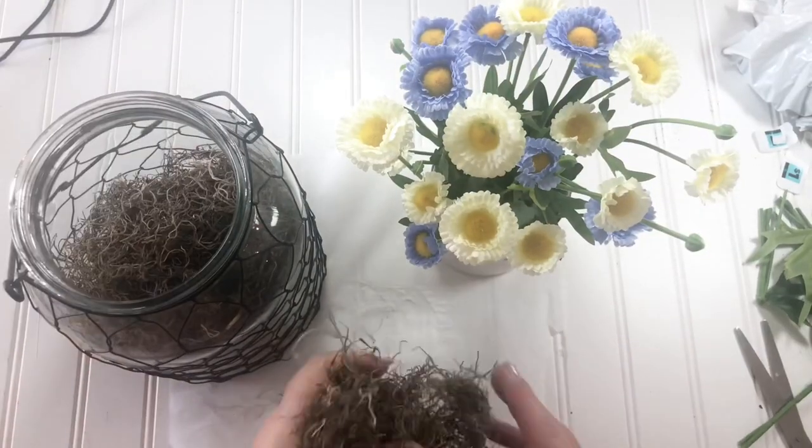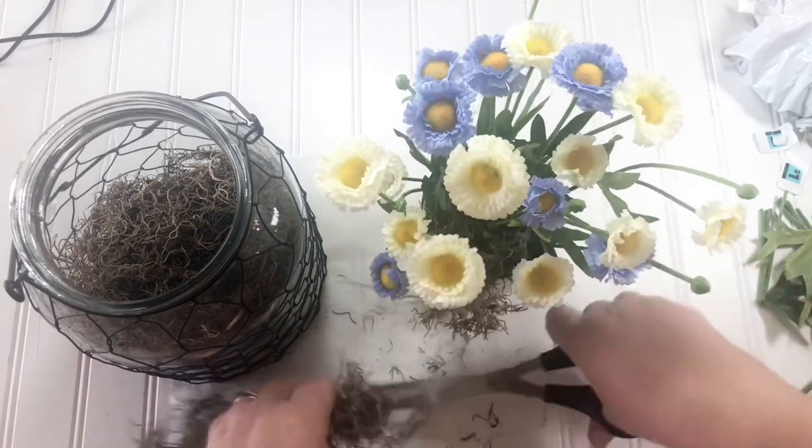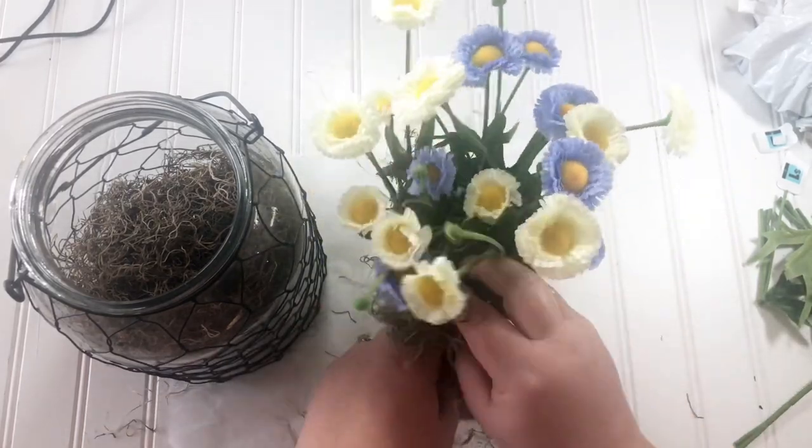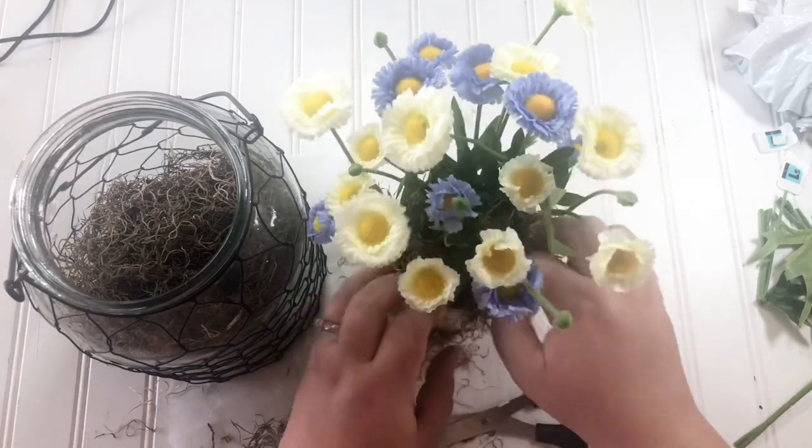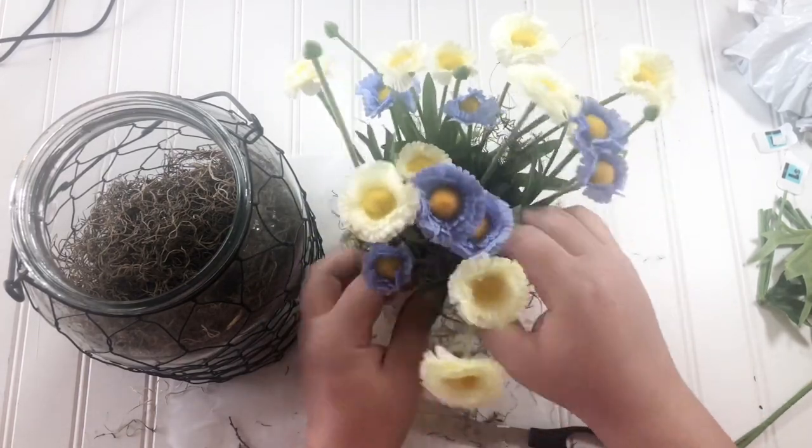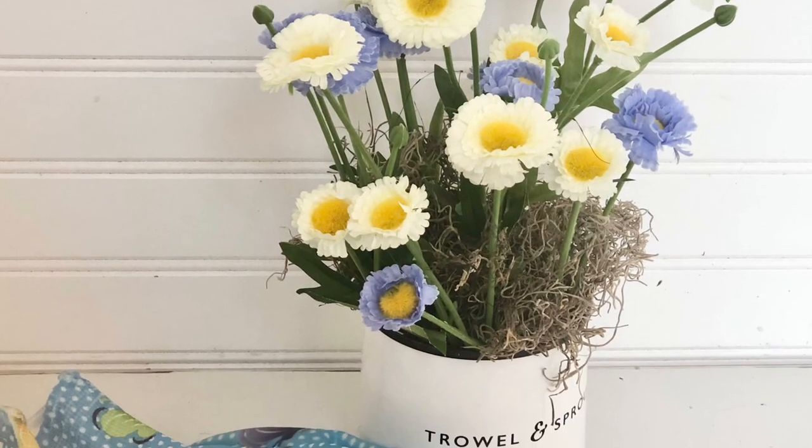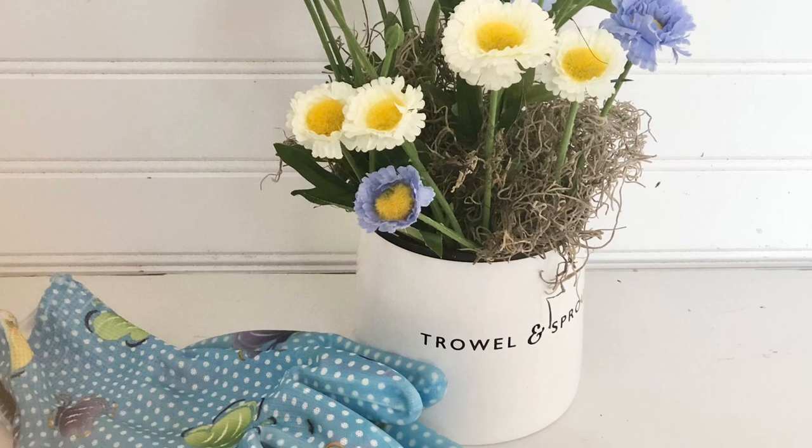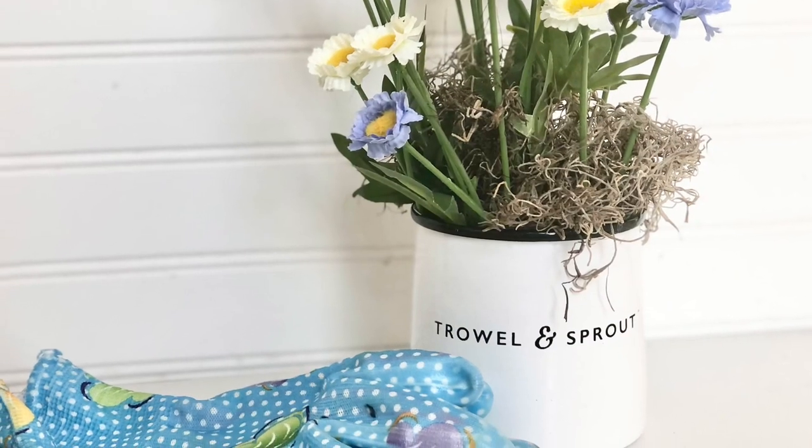To cover up the floral foam that was still peeking through some of the leaves, I used Spanish moss from the Dollar Tree to fill in those places. How cute is this, right? Now I was thinking you could use a Dollar Tree mug and paint the rim black to get a very similar arrangement.